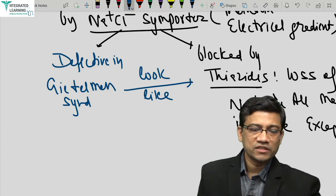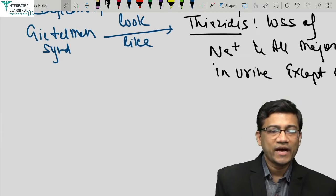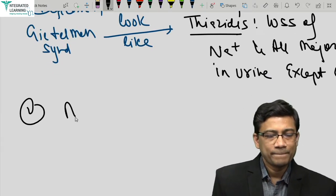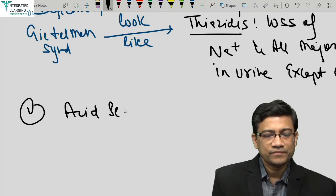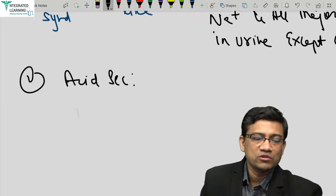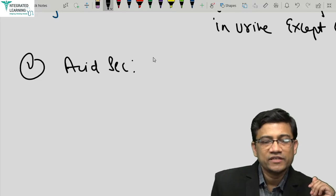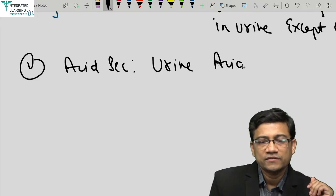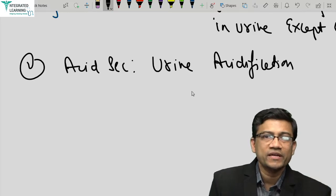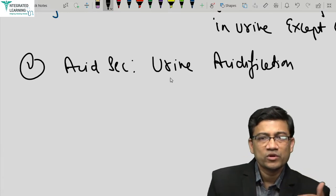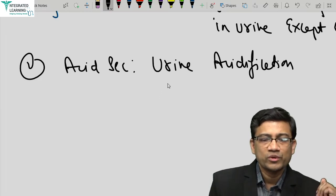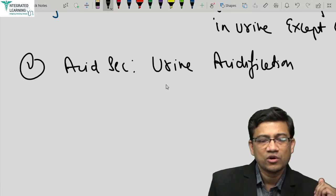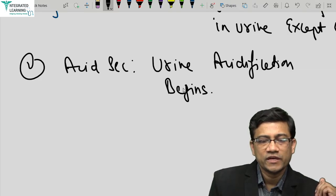The second function of the DCT is acid secretion. Acid secretion also occurs in PCT, but the special thing here is that urine acidification starts in the DCT. Some books include the ascending loop as well, since the ascending loop and DCT are similar and approaching each other anatomically, but urine acidification begins in the DCT.